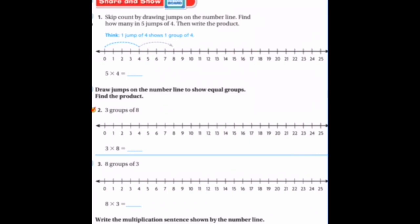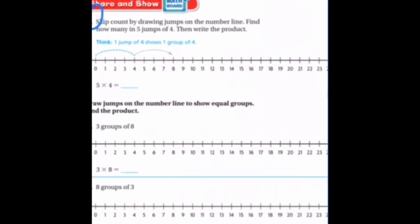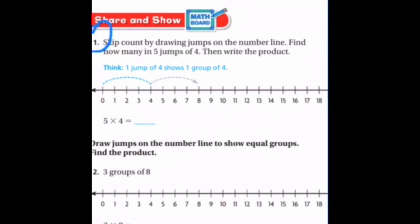The first one here, why don't you go ahead, I'll read the question, then you can pause the video and do that on your own. It says, skip count by drawing jumps on the number line. Find how many in five jumps of four. Make sure you're jumping by four, and you do that five times. And then it does say to write the product after that. So, I'll pause the video, do your five jumps of four, and write the product.